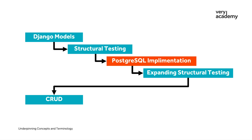And then finally, in the previous module, we transitioned to PostgreSQL, setting up and connecting a Django project using Docker, managing credentials, and implementing database-level constraints and triggers. Each module so far has tried to build upon the previous, ensuring a solid understanding of Django models and PostgreSQL database management.